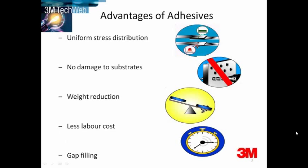Uniform stress distribution compared to mechanical techniques helps eliminate stress concentration at specific mounting points. Obviously no damage to substrates, so eliminating holes and maintaining protective coatings. It also allows the use of thin gauge metal substrates compared to techniques such as welding. There can often be reduced labor costs, and also it is easy to have gap filling properties.